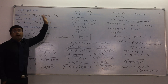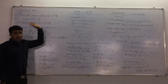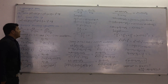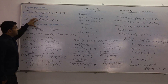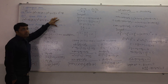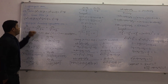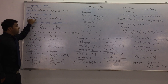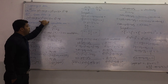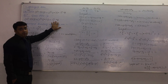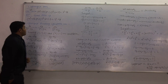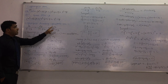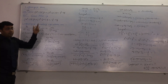This is a first order, first degree partial differential equation which we are solving here. For that, we write the equation in standard form — first the terms of p, then the terms of q, then the right-hand side. After that, we write the Lagrange's auxiliary equation to solve this Lagrange's form.